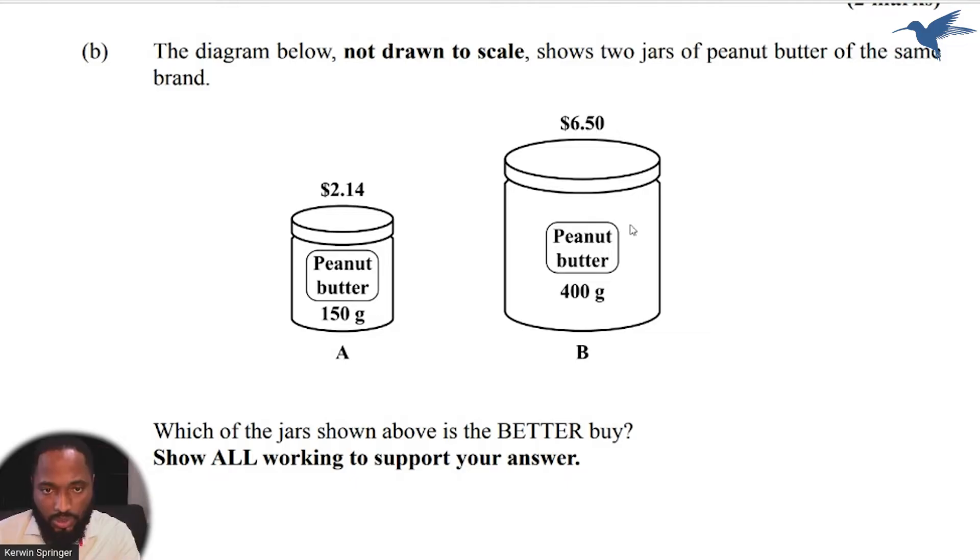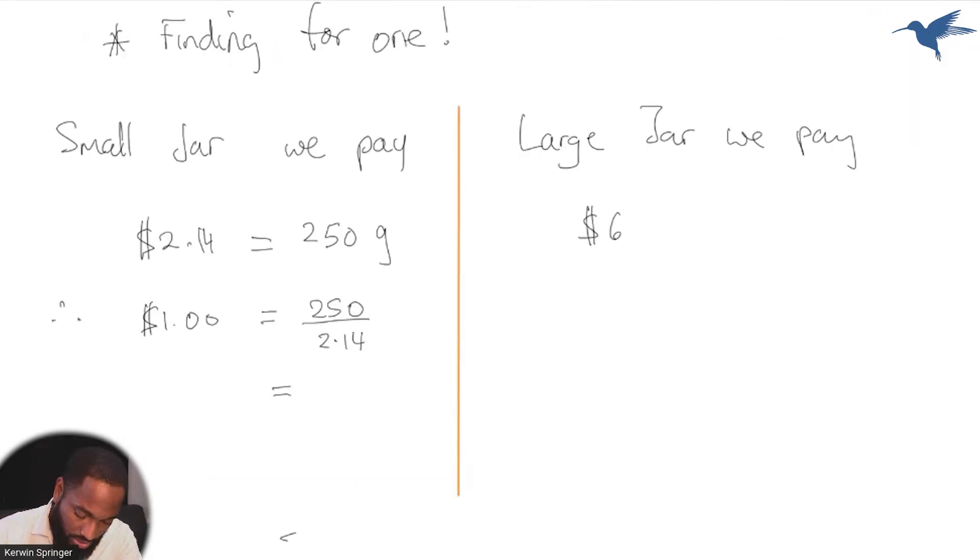We pay $6.50 for 400 grams. So let's see, if I had one dollar, how many grams will I get? I'll divide by this. This is the finding for one technique. I'm finding how much one dollar will give me in terms of grams and compare the two answers, and I'll see who is giving me more grams per dollar.